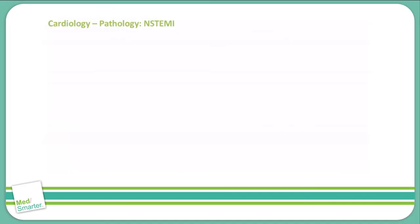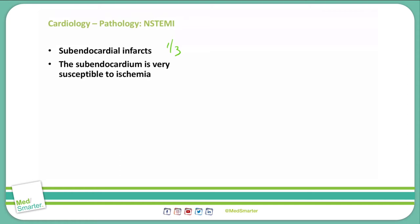Let's take a closer look at the NSTEMI myocardial infarction. The NSTEMI is a subendothelial infarct — that is the inner one-third of the myocardium. This area is very susceptible to ischemia because nutrients and oxygen must pass through the entire portion of the muscular ventricle to get to the subendocardium. So a small reduction in blood flow to that area can easily infarct the subendothelial layers.